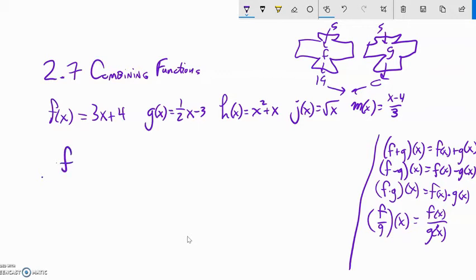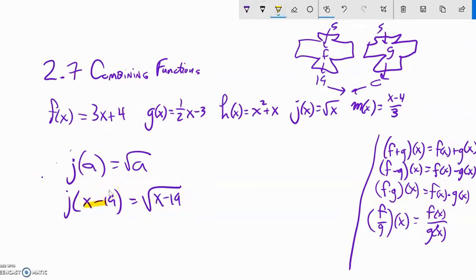So how about if I said, what is j of a? Well, you're just plugging a into j. So j of input equals square root of input. So that would be just the square root of a. We can't do anything with that. We can't figure out what that is from there. But that's what it would be. So it's interesting. I could say, what's j of x minus 19? Well, again, j of input is square root of input. So that would be square root of the input: x minus 19. Notice this x minus 19 took the place of that x. This x right here is just holding position. It's just a dummy.